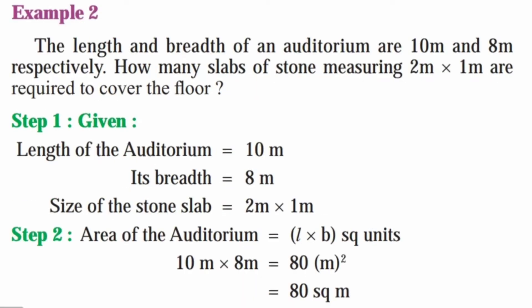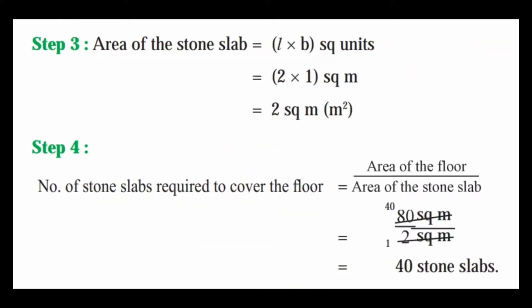Example 2: The length and breadth of an auditorium are 10 meter and 8 meter respectively. How many slabs of stone measuring 2 meter into 1 meter are required to cover the floor? Given: length of the auditorium is equal to 10 meter, breadth is equal to 8 meter, size of the stone slab is equal to 2 meter into 1 meter. Area of the auditorium is equal to length into breadth, that is 10 meter into 8 meter, equal to 80 square meter.